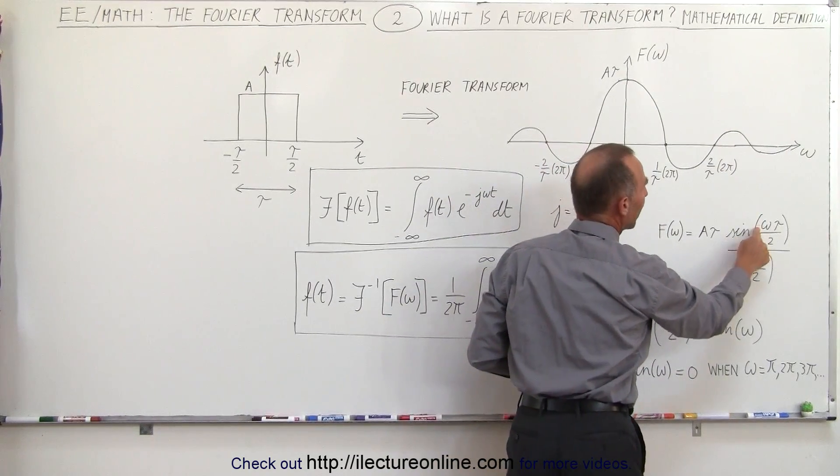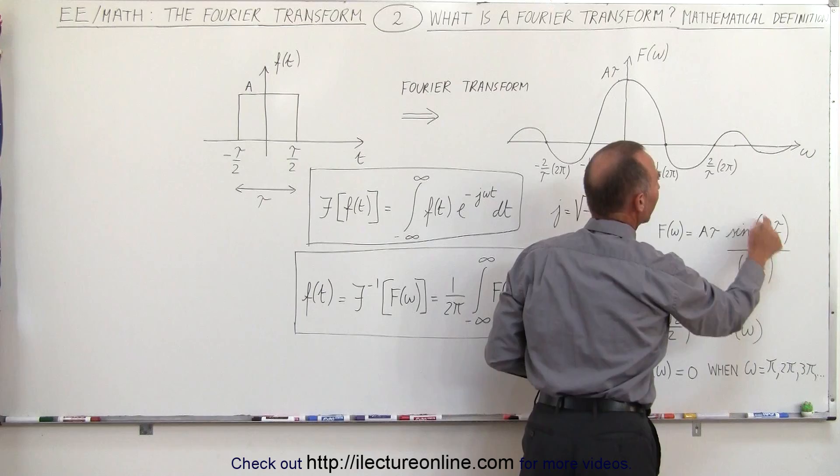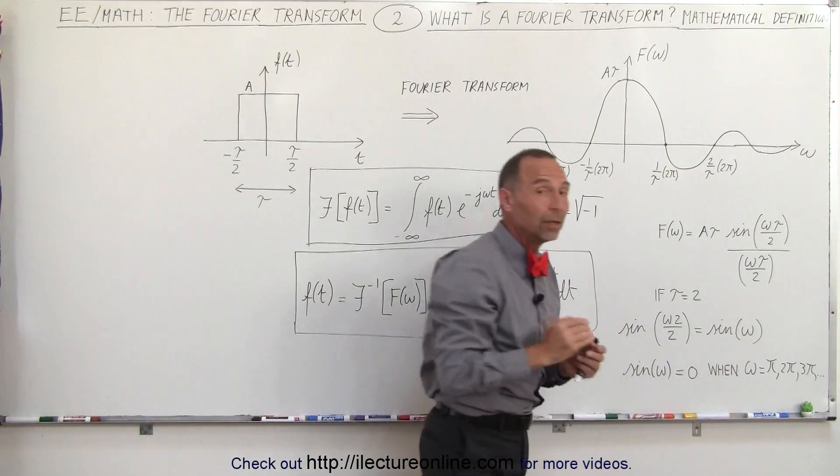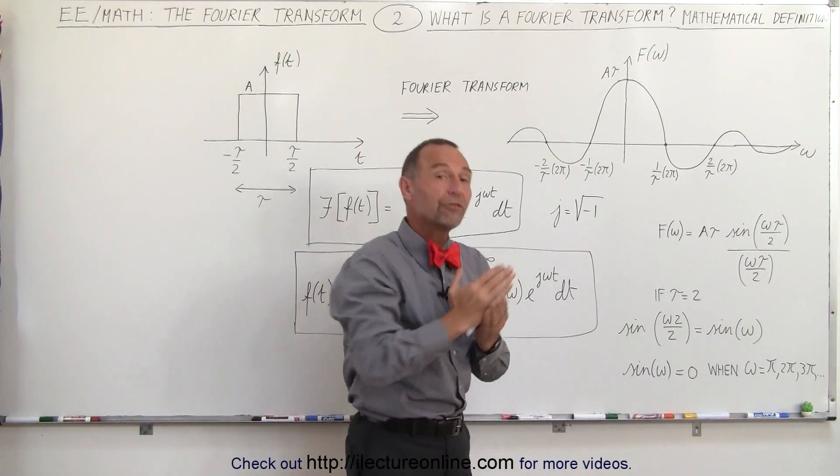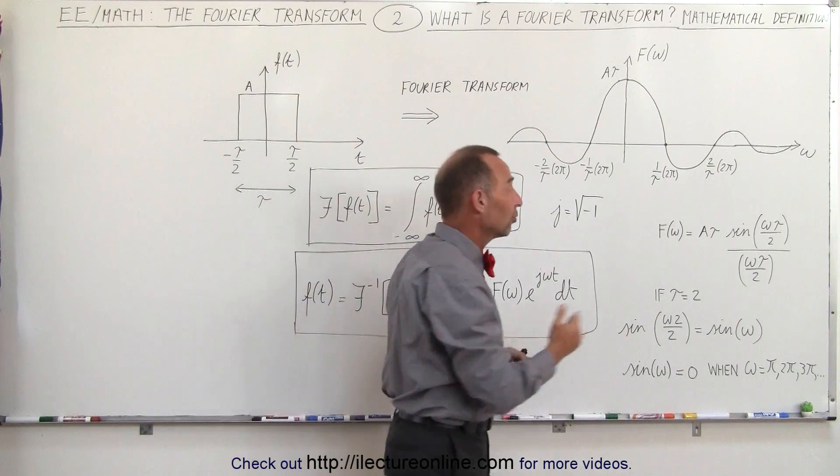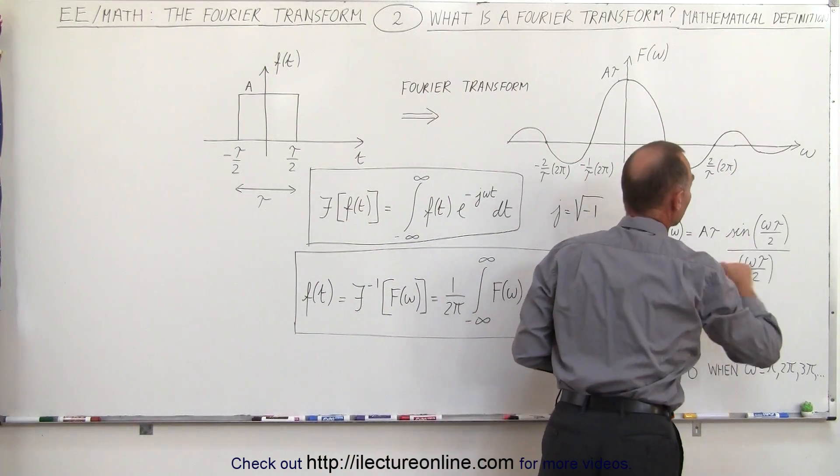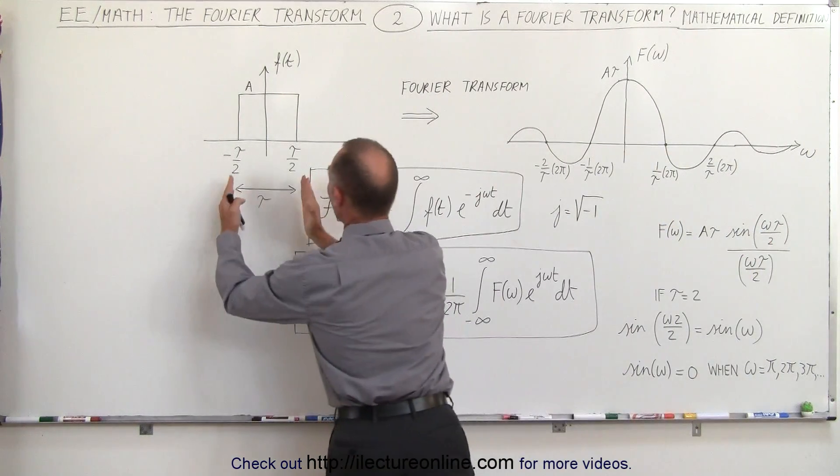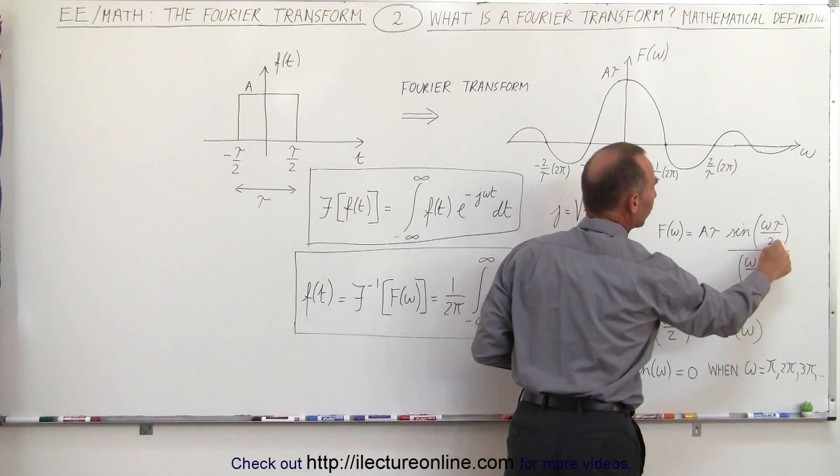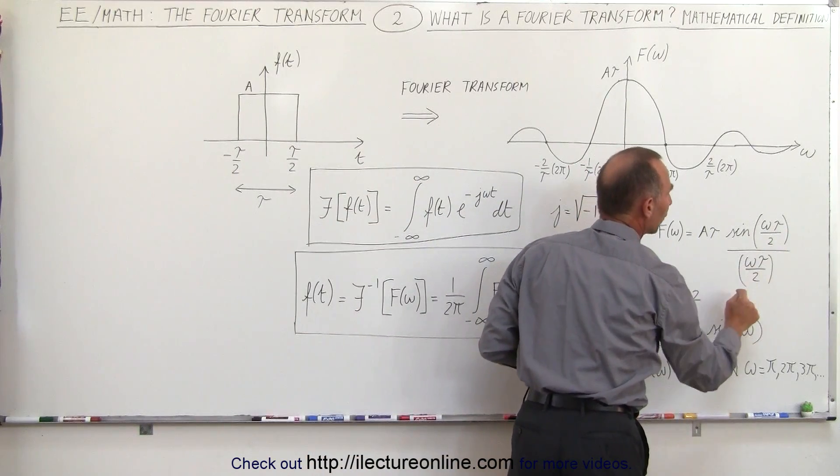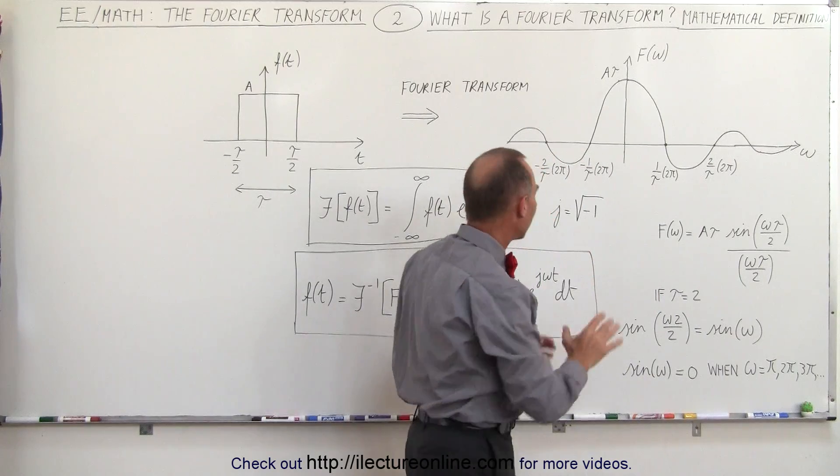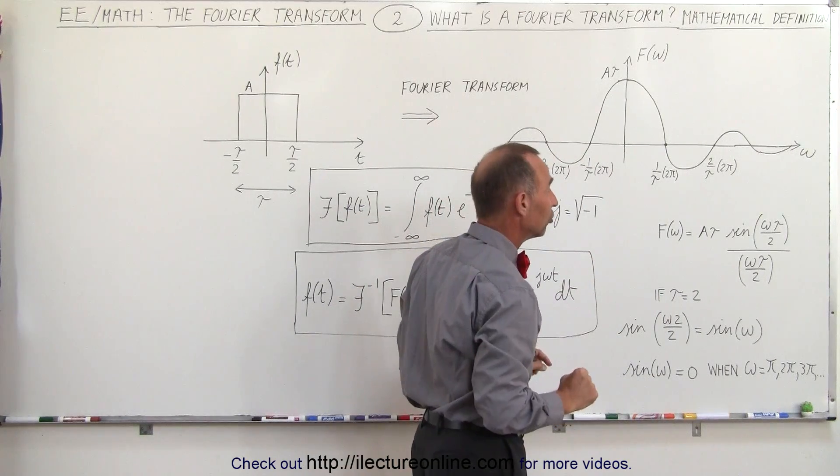We multiply that times the sine of omega tau over 2. Omega can be any frequency now. Remember that we don't have discrete frequencies like we did in the Fourier series. We have a frequency function times tau which is the width of the pulse input divided by 2 divided by omega tau over 2. We'll show you how we derive that using this mathematical definition.